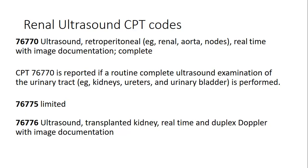A complete examination of the urinary tract must be done to report this CPT code. In short, if the report mentions both kidneys and the urinary bladder along with a renal condition, we can report the complete ultrasound CPT code 76770. A sample report will be shared at the end of the video to help you understand the difference between coding complete and limited ultrasound CPT codes for renal ultrasound.